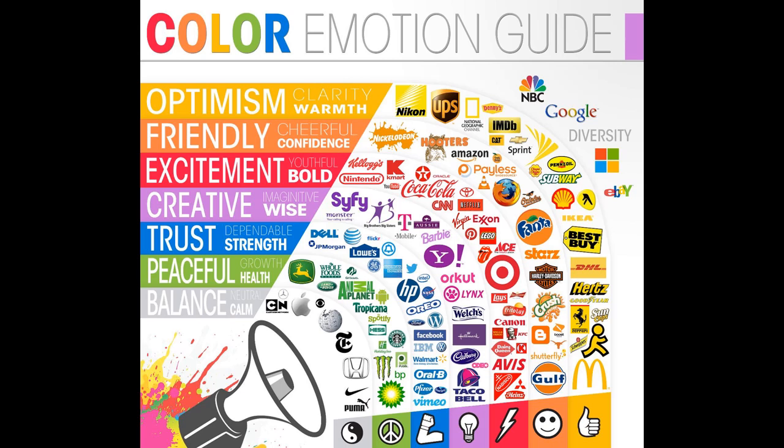Colors give us all sorts of different types of information. We've talked about this before — about certain colors affecting us. Certain colors equal optimism and friendliness and excitement and creativity and trust. They may create a sense of peacefulness and balance. Companies use color all the time. Remember we said that most companies' logos use one to two colors because colors convey emotion?